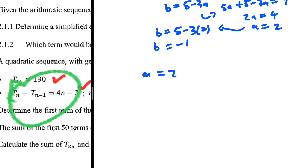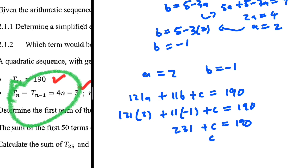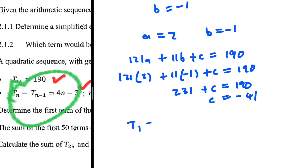Now using t11 = 190 to find c: with a = 2 and b = -1, we have 121(2) + 11(-1) + c = 190, so 242 - 11 + c = 190, giving 231 + c = 190, and therefore c = -41.